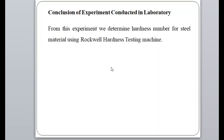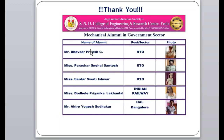Conclusion: From this experiment, we determine the hardness number of steel material using the Rockwell hardness testing machine. In this way, in the actual laboratory, the hardness number is determined using the Rockwell hardness testing machine. Thank you for watching the experiment on Rockwell hardness test.